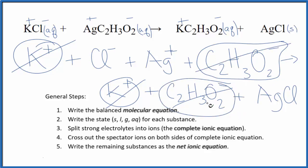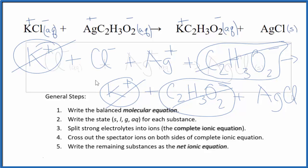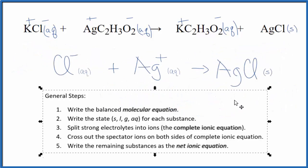And what's left, this is going to be the net ionic equation for KCl plus AgC2H3O2. So I'll clean this up, put the signs in, we'll have our net ionic equation. So this is the net ionic equation for potassium chloride plus silver acetate.